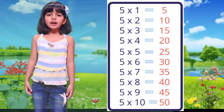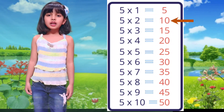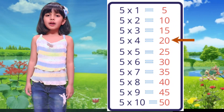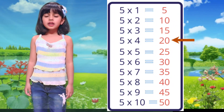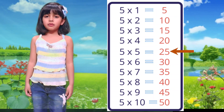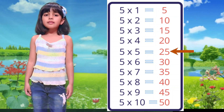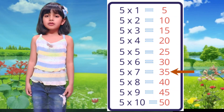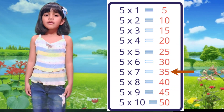Table of 5. 5×1 is 5, 5×2 is 10, 5×3 is 15, 5×4 is 20, 5×5 is 25, 5×6 is 30, 5×7 is 35.